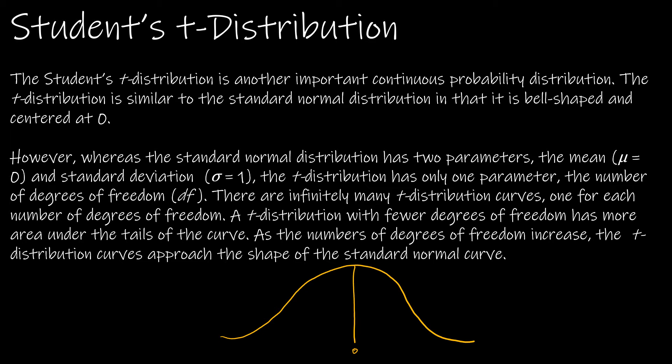A normal model is centered at zero with a standard deviation of one. The t-distribution is a little bit fatter in the tails and not quite as tall, so this has a fatter tail.